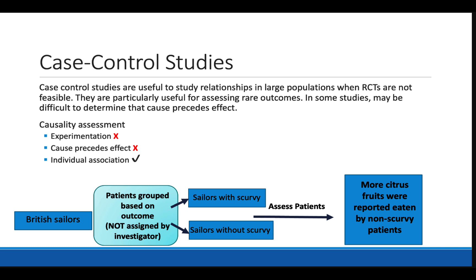These studies can also be hampered by recall bias. For example, if we asked scurvy and non-scurvy patients what they ate for the last month, non-scurvy patients may overestimate their fruit consumption. For these reasons, it can be more difficult to infer causality.